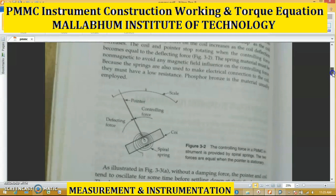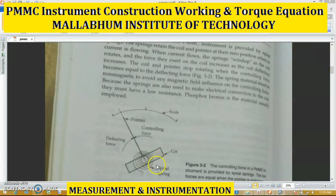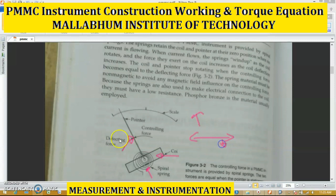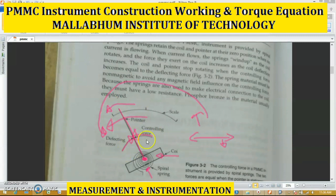This is the actual spring arrangement and this is the coil arrangement. The pointer is attached, and this is your deflecting force. This deflecting force is generated when current is supplied to the coil, flux is generated, and then a force is generated — that is the deflecting force. The controlling force: since the pointer is attached to the spring arrangement, the spring will try to move the pointer back to zero. The spring is responsible for returning the pointer to the zero position — that is your controlling force. Whenever these two forces are equal, the pointer rests at some point.